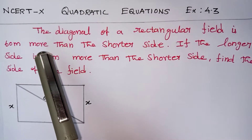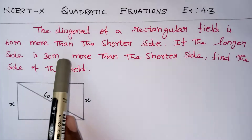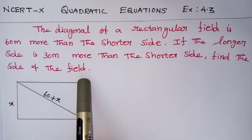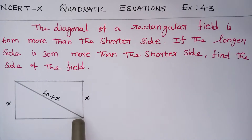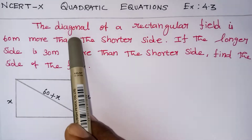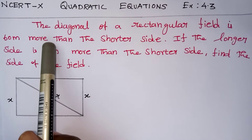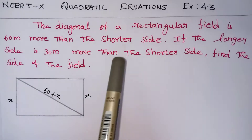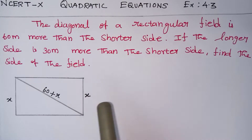They have given us that the diagonal of the rectangular field is 60 more than the shorter side. I have assumed the shorter side is x. In a rectangle, this is the shorter side, this is the longer side, and this will be the diagonal. So the diagonal is 60 more than the shorter side — 60 more means addition — so the diagonal is 60 plus x.